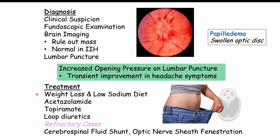In summary: weight loss and low sodium diet are important long-term management strategies. Because these take time, pharmacological treatment with acetazolamide, topiramate, or loop diuretics should be started. If pharmacological treatments fail or there is worsening visual loss, surgery such as CSF shunt or optic nerve sheath fenestration is indicated. Bariatric surgery has also been noted to help reduce or resolve this condition by promoting weight loss.